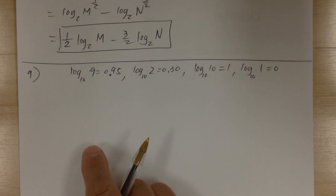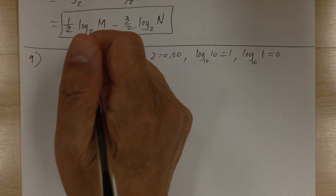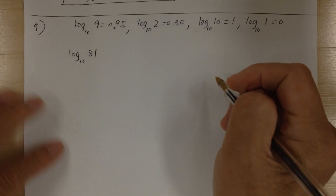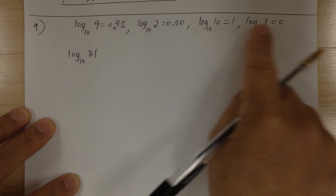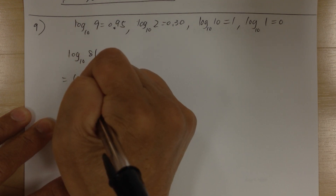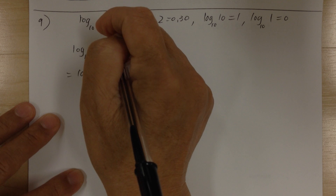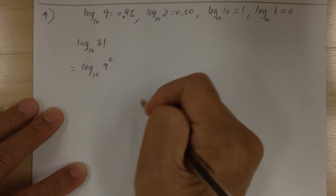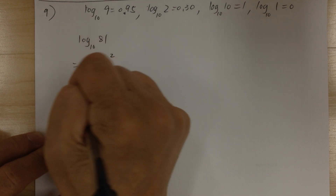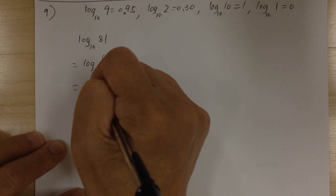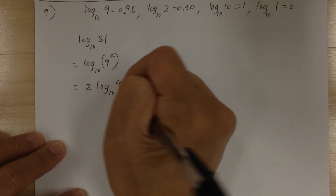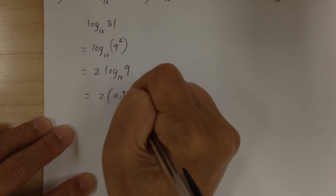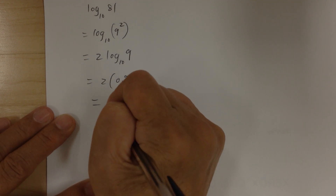You have to know these too. So for number 9, you're looking for log base 10 of 81. You want to break 81 down into 9, 2, 10, or 1. You can either do 9 squared or 9 times 9. If you do 9 squared, then you can make the 2 come to the front, so it becomes 2 log base 10 of 9. Now you can evaluate: 2 times 0.95 equals 1.90.